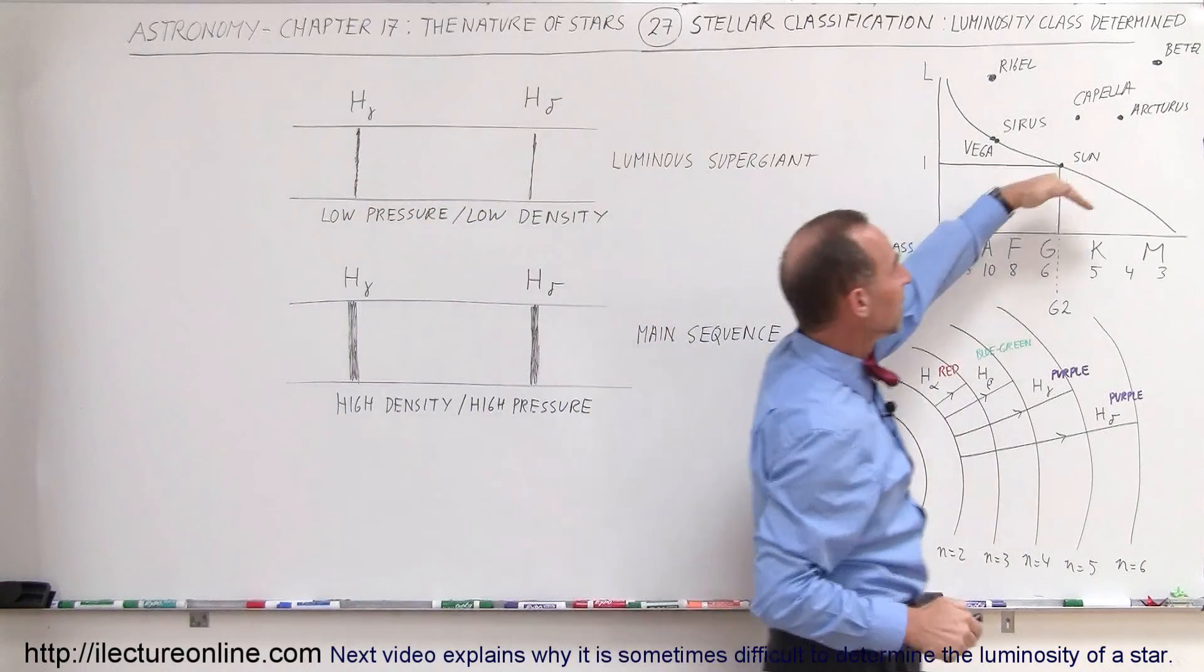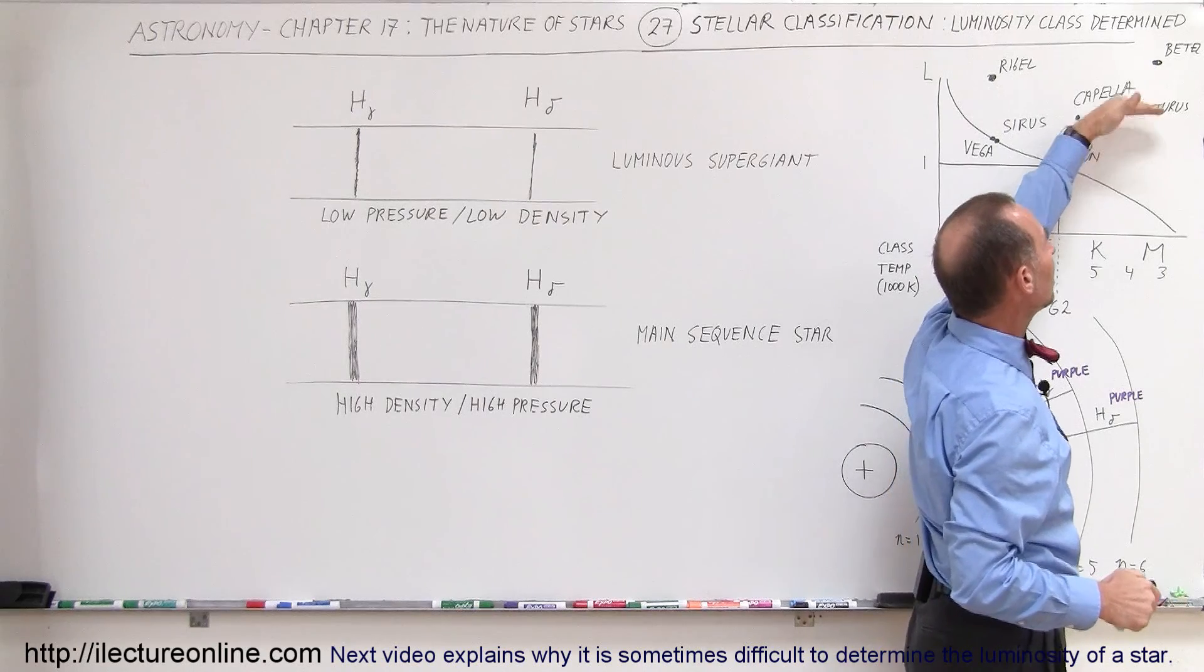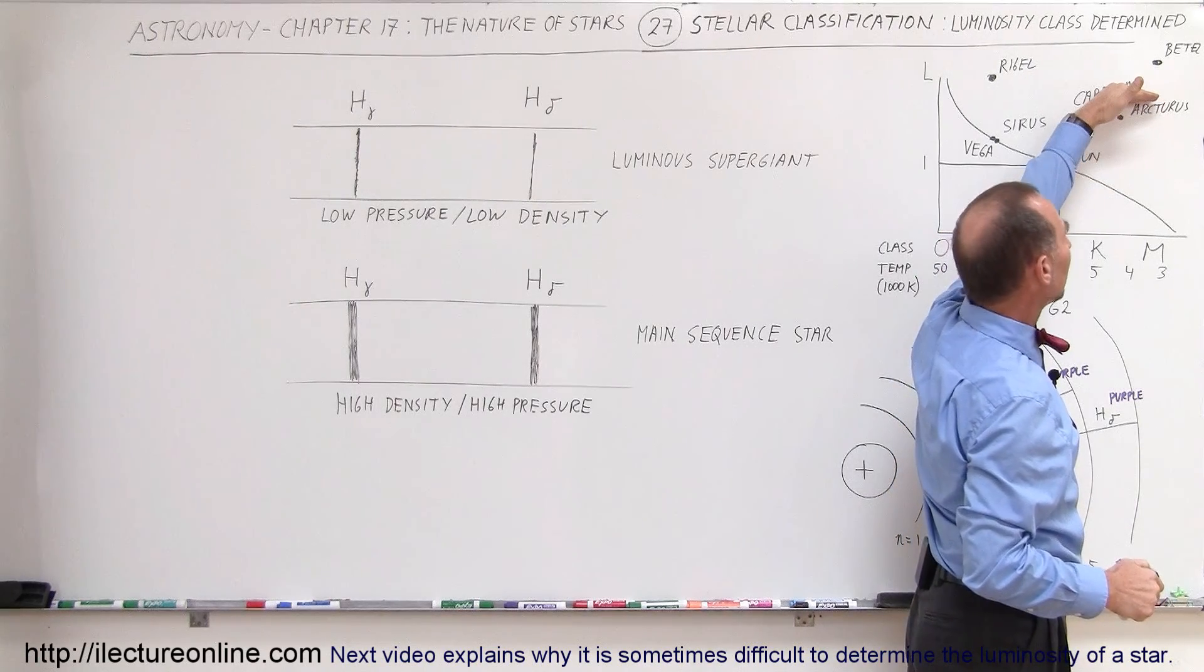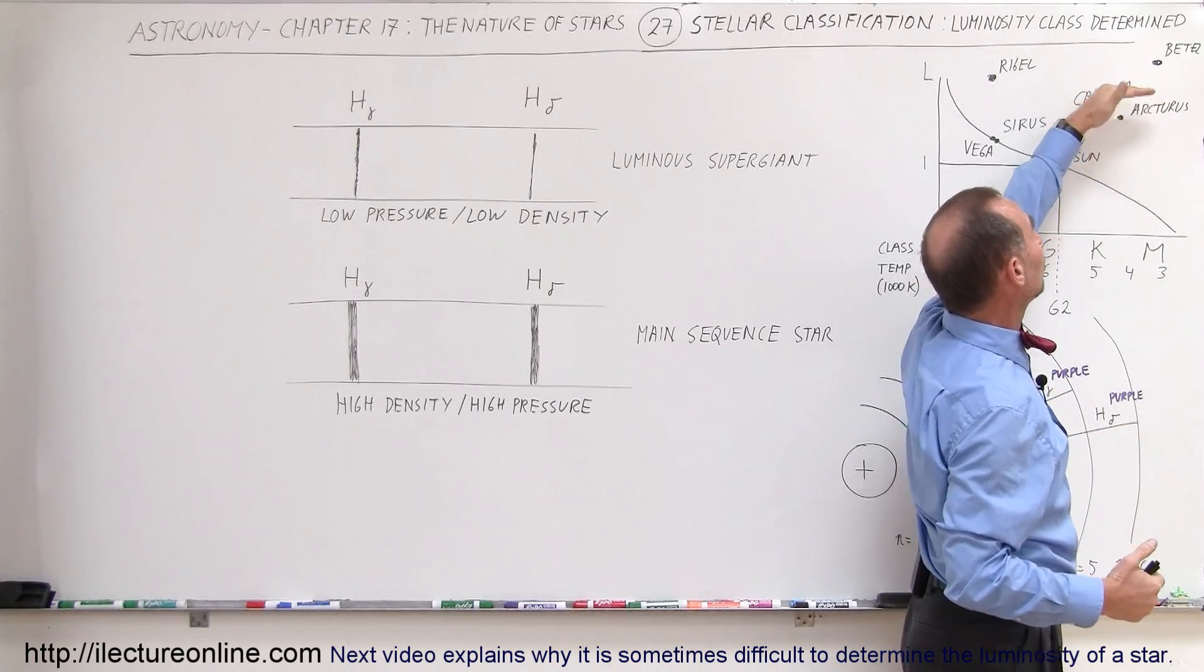So from the main sequence being class 5, we have the subgiants class 4, giants class 3, then we have the luminous giants or the bright giants as we call it, which is class 2.